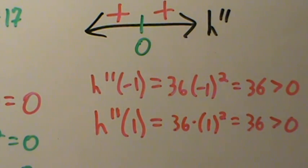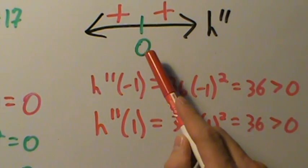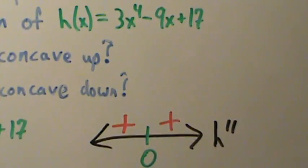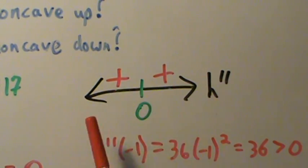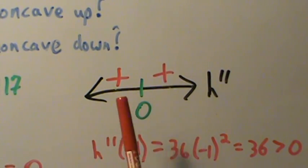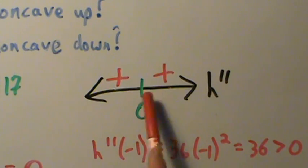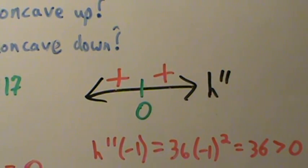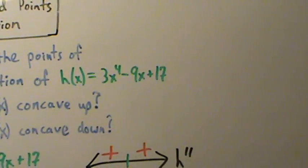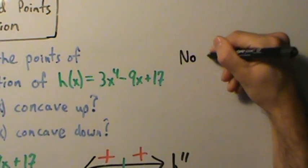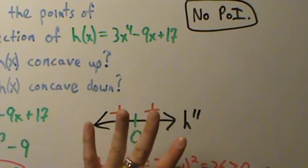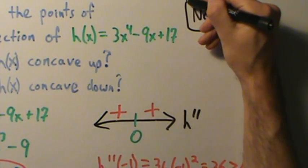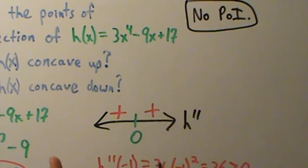So what does that mean? Do we have a point of inflection at x equals zero? No, we don't. Because a point of inflection is a point where the concavity changes. Does the concavity change here? No — the second derivative is positive on both sides. So the function is concave up on both sides, the concavity does not change, and therefore x equals 0 is not a point of inflection. The second derivative does not change sign.